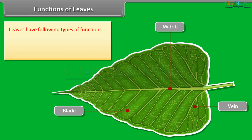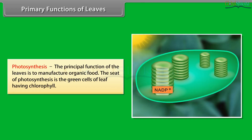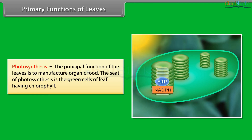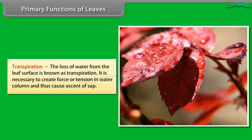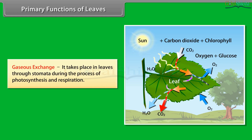Leaves have primary and secondary functions. The primary functions include: photosynthesis — the principal function of leaves is to manufacture organic food, with the seat of photosynthesis being the green cells containing chlorophyll; transpiration — the loss of water from the leaf surface, which creates tension in the water column and causes ascent of sap; and gaseous exchange — which takes place through stomata during photosynthesis and respiration.